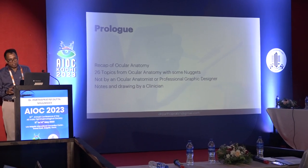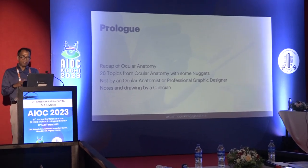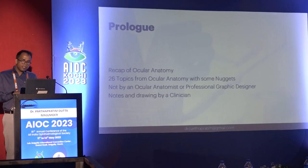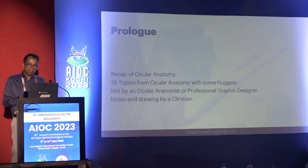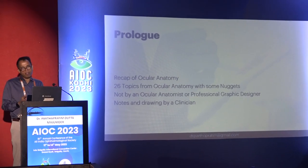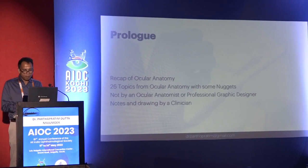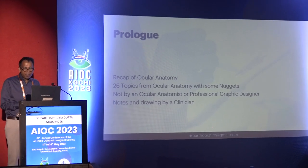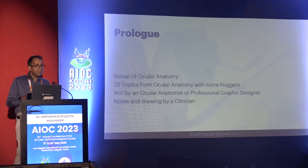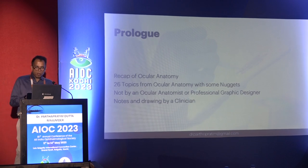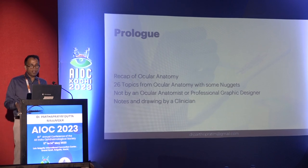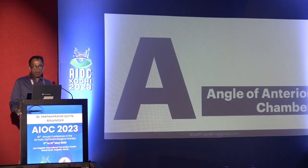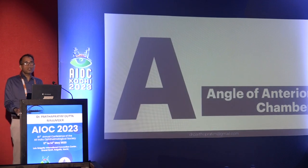This is a quick revision course of ocular anatomy. I'm sure none of you are expecting a 360-degree coverage in one session. We'll be discussing 26 ocular anatomy topics mixed with some fun and quizzes. The speaker is not an ocular anatomist or professional graphic designer — as a clinician I've tried my best to highlight important anatomical facts. There is a bias in selection; topics from oculoplasty and strabismus have come very little in this talk, and all the diagrams are drawn by me.